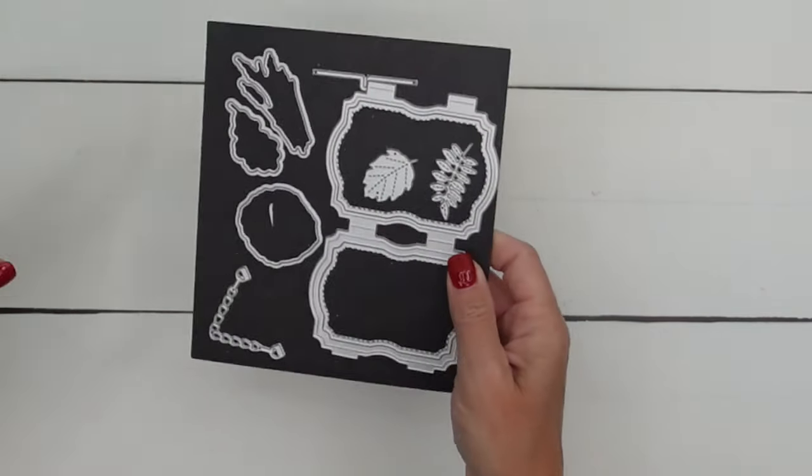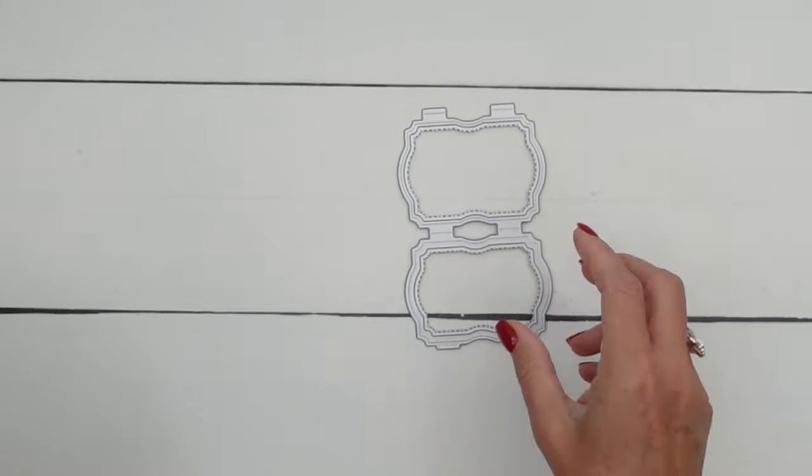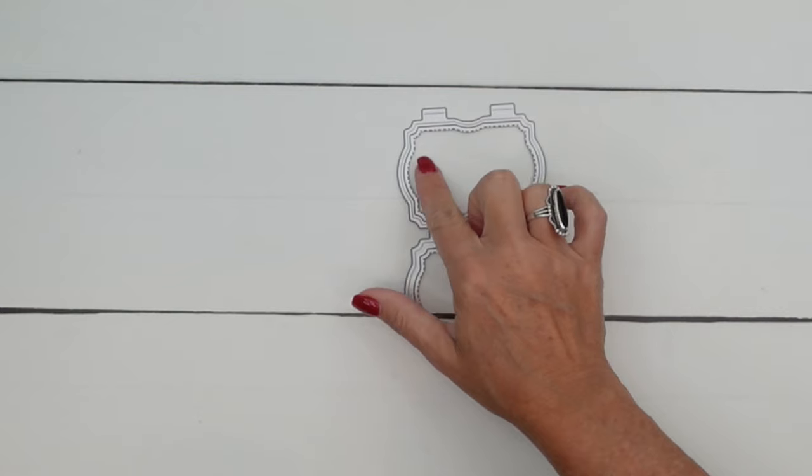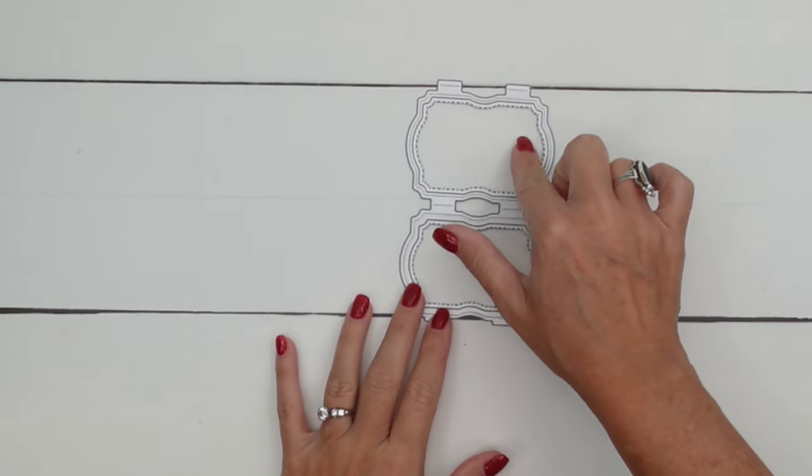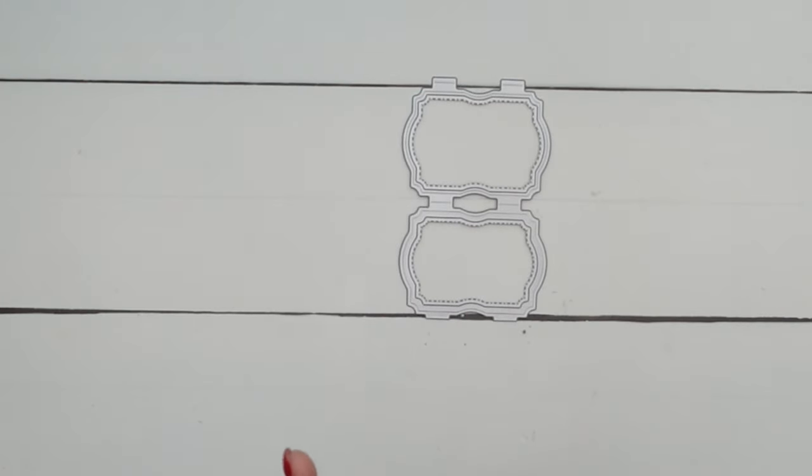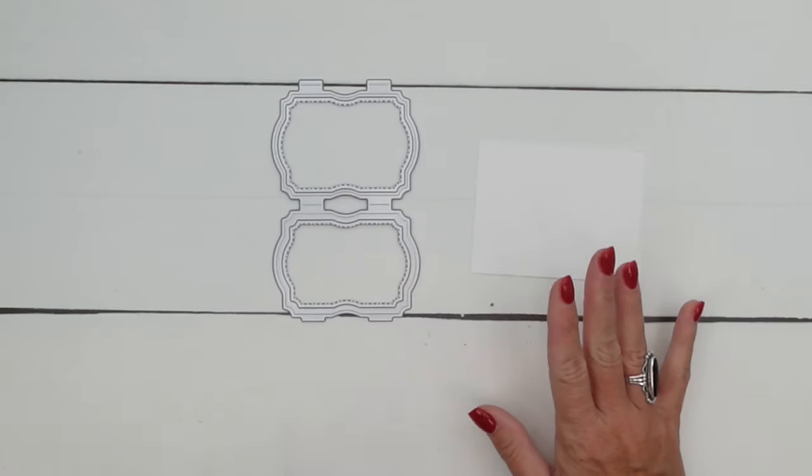So we're going to do some stamping. This die set has this really unique die that looks like this. It creates this frame that folds. And it also gives you these two really great negative images here that are labels. So when you cut the whole thing, you actually get two labels from the inside. We only need one of them.